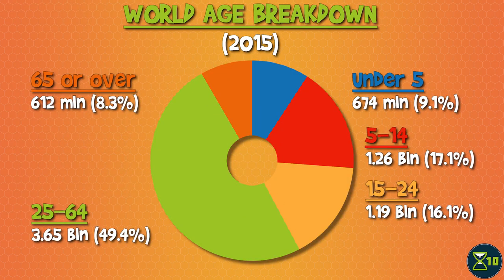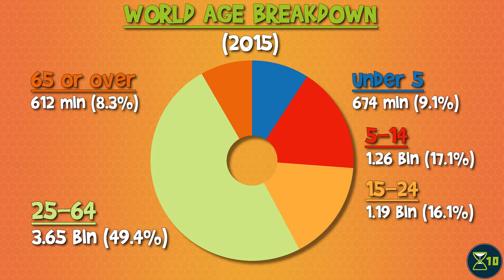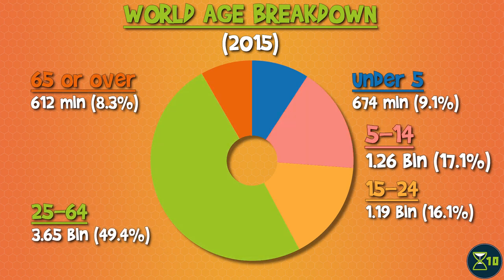The growth rate of Africa was between 2 and 4%, though that too is projected to go down. The age breakdown in 2015 saw people between the ages of 25 and 64 as the largest bracket, with 3.65 billion people, followed by children aged 5 to 14 at 1.26 billion.